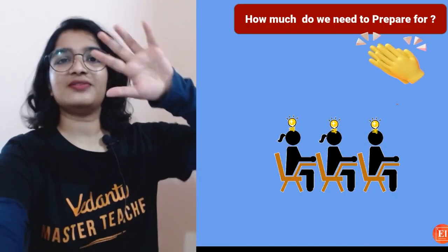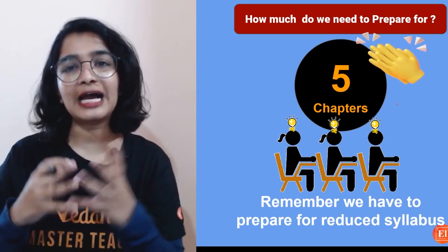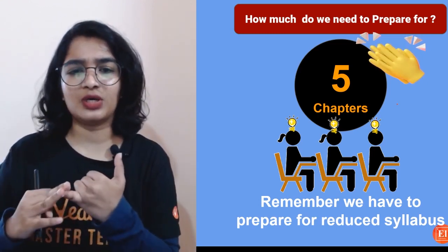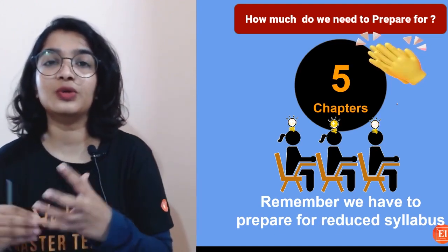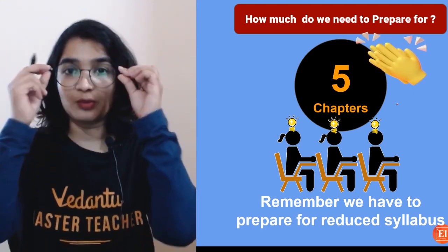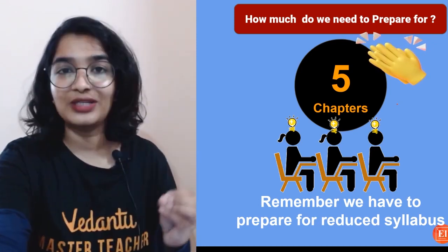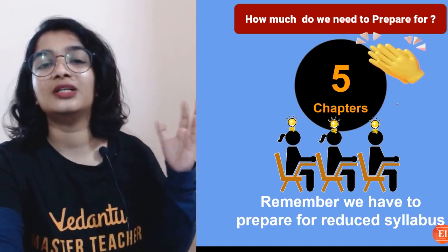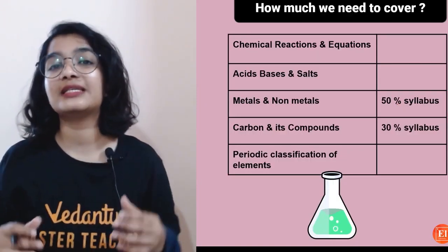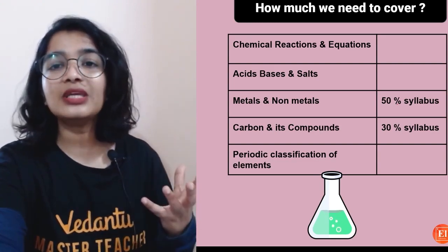For CBSE students, you have five chapters to cover: Chemical Reactions and Equations, Acids Bases and Salts, Metals and Non-metals (only about 50% of the syllabus remains), Carbon Compounds (about 30% syllabus), and Periodic Classification of Elements. Always follow the reduced syllabus. On this channel we have covered deleted portions too, but when preparing for exams, focus only on the reduced syllabus.